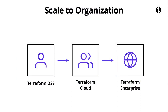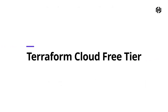Much like GitHub provides a shared notion of a master branch for a development team, what Terraform Cloud does is provide a shared set of state so that you have a master notion of what your infrastructure looks like. It becomes a point of collaboration, just like GitHub does for development. Last year, we announced Terraform Cloud along with its Free Tier.